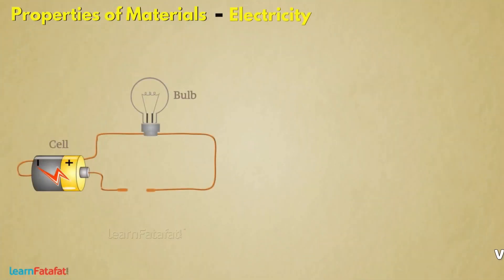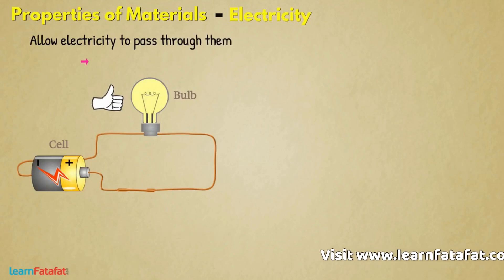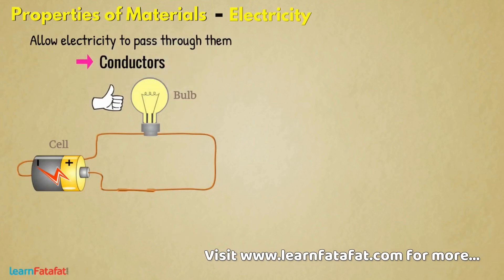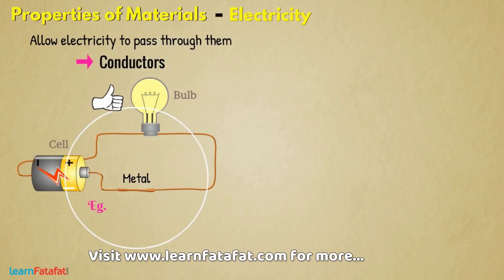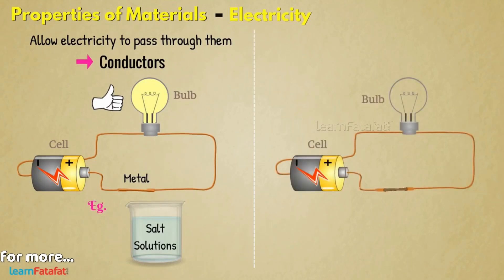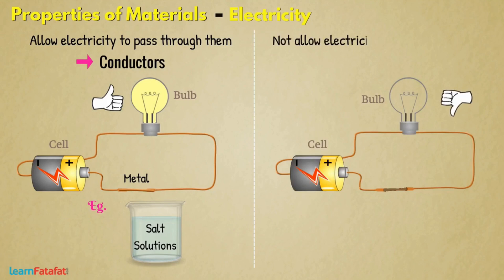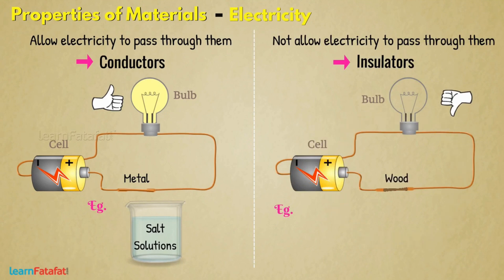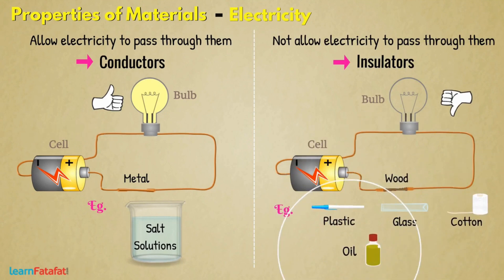Electricity: Some materials allow electricity to pass through them; these are called conductors. For example, all metals, salt solution, etc. Other materials which do not allow electricity to pass through them are insulators. For example, wood, plastic, glass, cotton, oil, distilled water, etc.